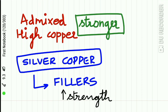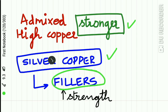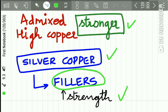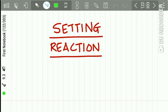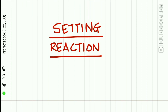These admixed high copper alloys are stronger because the silver-copper phase acts as fillers in between the phases, which increases the strength. The composition is silver 69%, tin 17%, copper 13%, and zinc 1%.